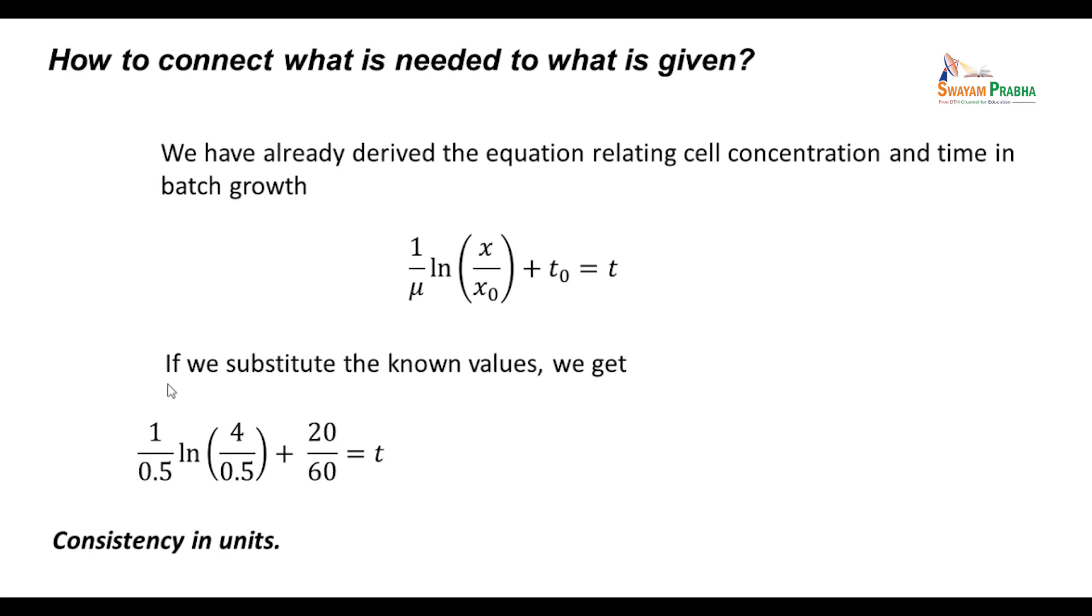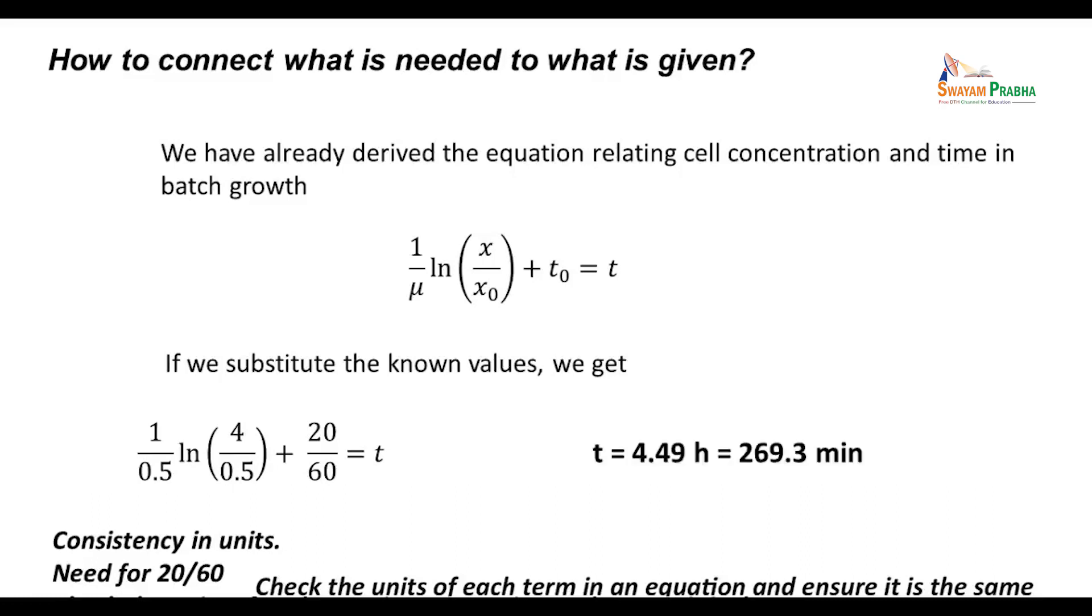We have checked for consistency in units, each term having the same system of units. It is always good to check the units of each term in an equation and ensure it is the same. If we calculate this left hand side, we get t = 4.49 hours or 269.3 minutes.